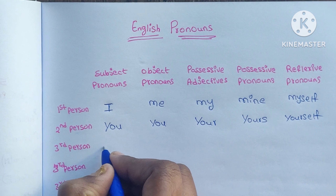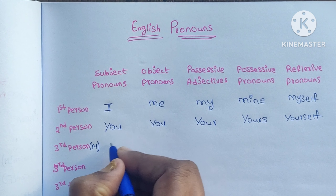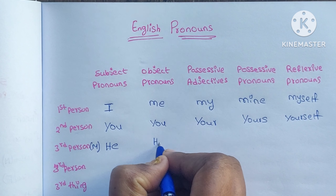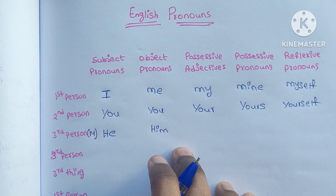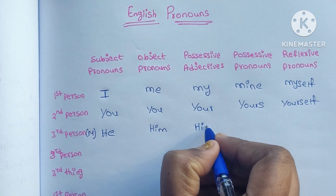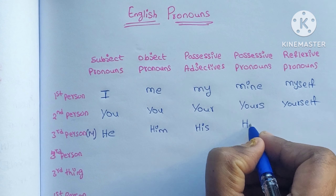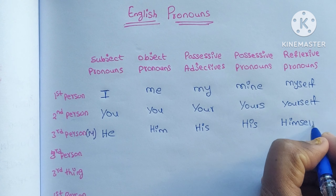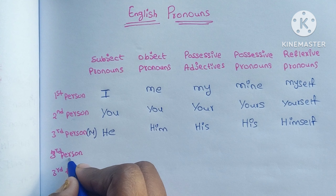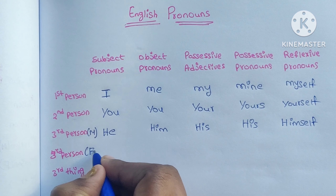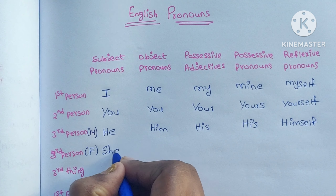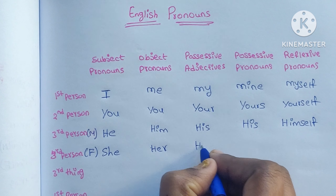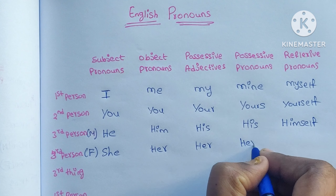Third person singular male: subject is 'he', object is 'him', possessive adjective is 'his', possessive pronoun is 'his', and reflexive is 'himself'. Third person singular female: subject is 'she', object is 'her', possessive adjective is 'her', possessive pronoun is 'hers', and reflexive is 'herself'.